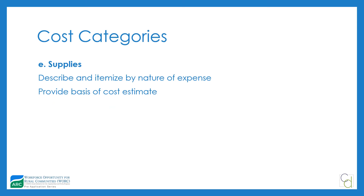Next is supplies — anything with a unit cost under $5,000 or a usable life of a year or less. The cost estimate basis could be vendor quotes, historical costs to your organization, or some other defensible means. As with every other section, make sure you explain in your budget narrative where these figures come from.